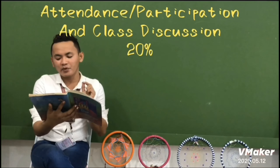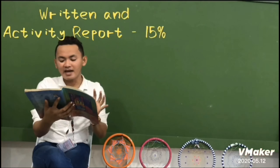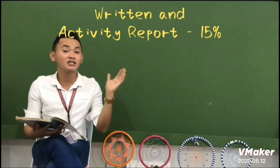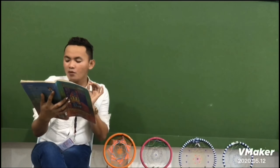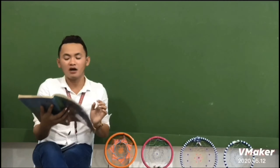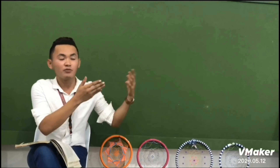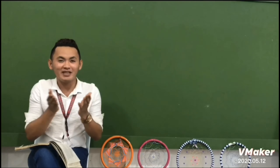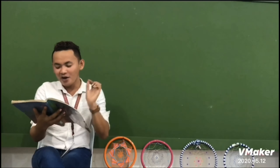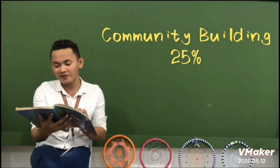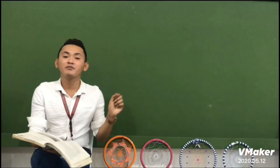For the grading system: attendance and class participation is 20%. Exams are 20%. Research and activity reports are 15% — since NSTP 1 has discussions, these reports carry influence. Community building or community immersion carries the highest percentage at 25%. Many students have the perception that NSTP only involves cleaning, but it is much more. Team participation is 20%. All in all, the total is 100%. It is a must that on the first day of class, teachers inform students about this grading breakdown, especially that community immersion carries the greatest weight.